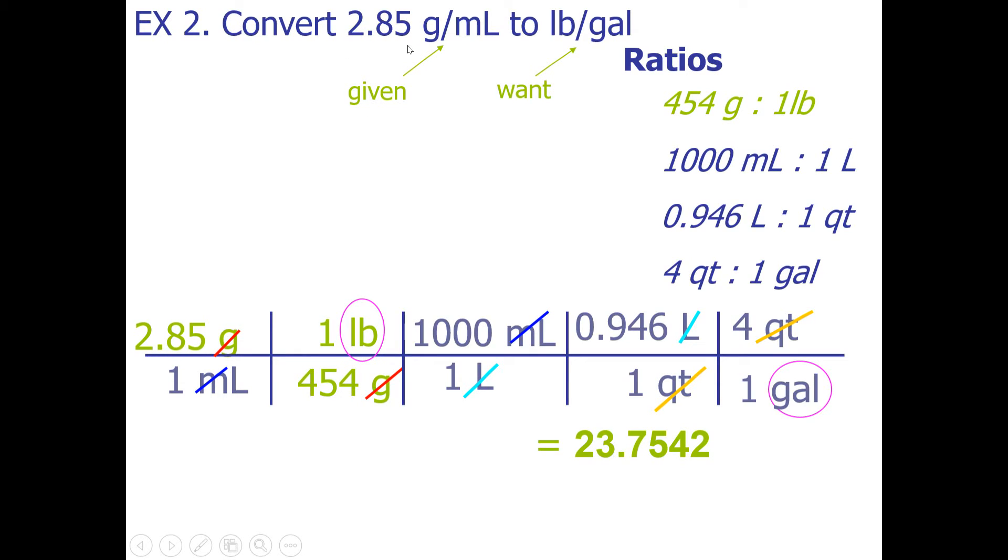The calculator spits out this answer. Think about how many sig figs should be in your answer. I see three sig figs in the given, therefore I will round my answer to three sig figs: one, two, three. Seven rounds up to an eight because it's sitting next to five. My final answer is 23.8 pounds per gallon.